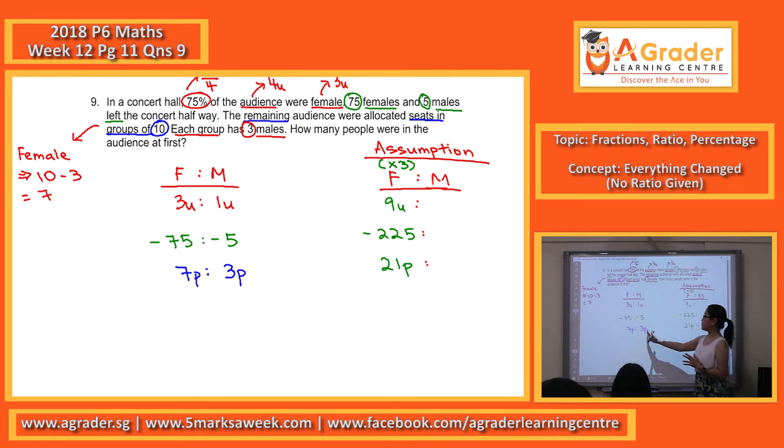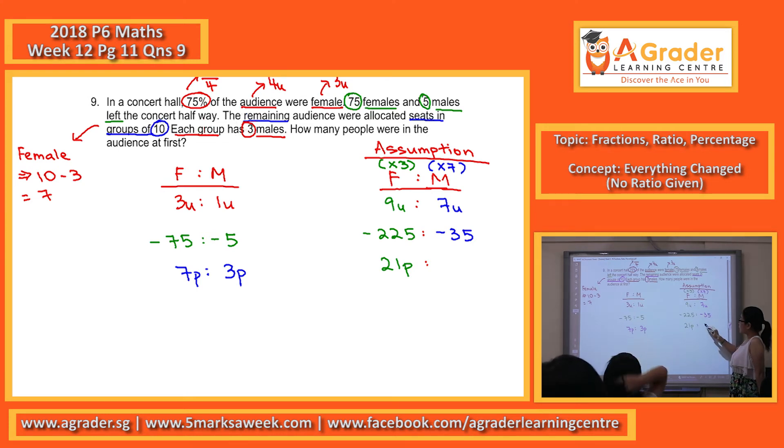For the male, 3 times 7 to make it the same. So 1U times 7, 7U. Negative 5 times 7, negative 35. And last bit of course, 3P times 7, you get 21P.